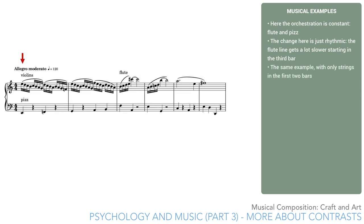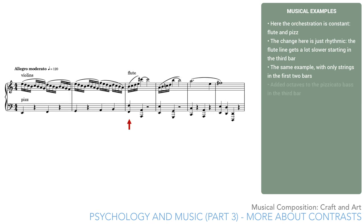Now I've rearranged the same example with only strings in the first two bars. As we'd expect, the flute's entrance stands out more. And I could make it stand out still more if, for example, I added octaves to the pizzicato bass in the third bar.